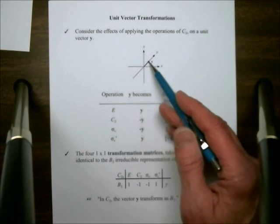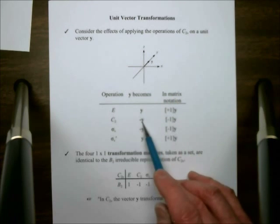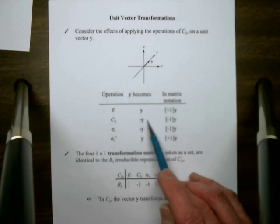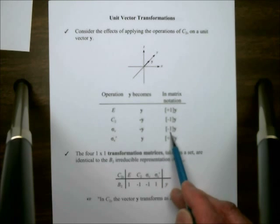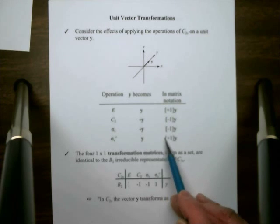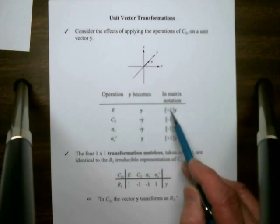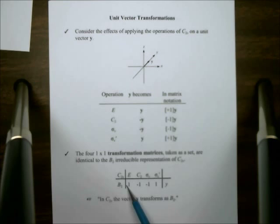Finally, we can do y. Y, again, E does nothing to it, plus 1. The C2 flips its sense, so we have a minus 1. Sigma v, now sigma v is now perpendicular to y, so this flips it into the negative of itself. Y lies in sigma v prime, so nothing happens to it, it's a plus 1. So from this we get the characters 1, minus 1, minus 1, 1.